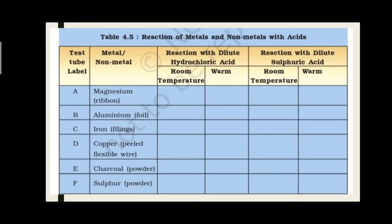Hydrogen gas free होती है। Magnesium chloride मिलता है और वह reaction hot होती है। Aluminium chloride और Aluminium sulfate मिलते हैं साथ में H2 gas। Iron chloride और Iron sulfate यानी FeCl2 और FeSO4 मिलते हैं। उसी तरह Copper है तो Copper chloride और Copper sulfate मिलता है।